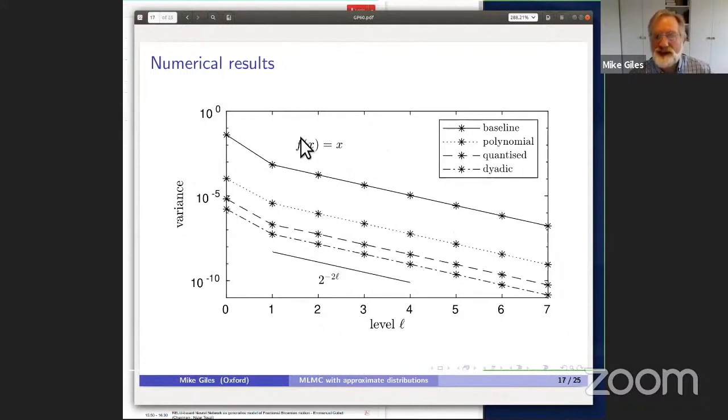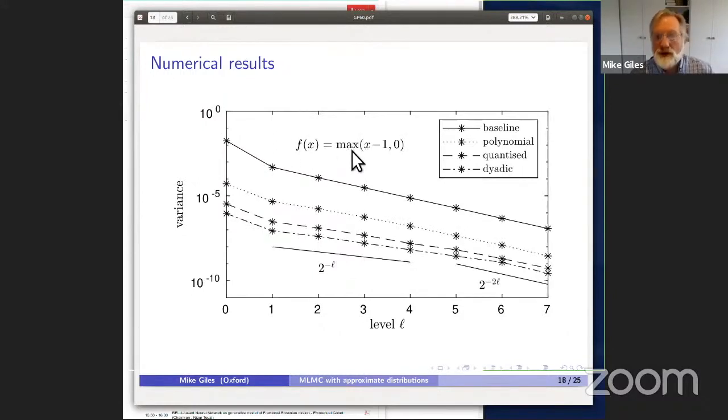I forgot to say that this is in the case where f of x is just x. When we go to the case relevant to put and call options, this is where you see a slight change in the slope in the numerical results. That's what was showing up in the analysis.